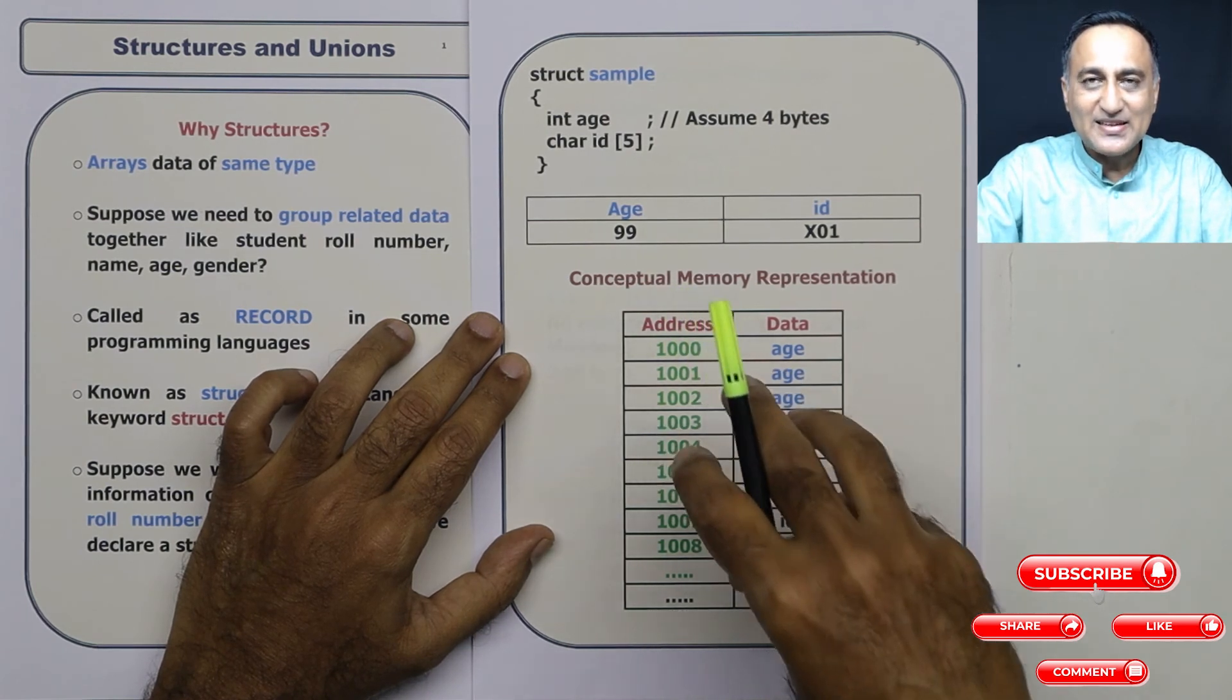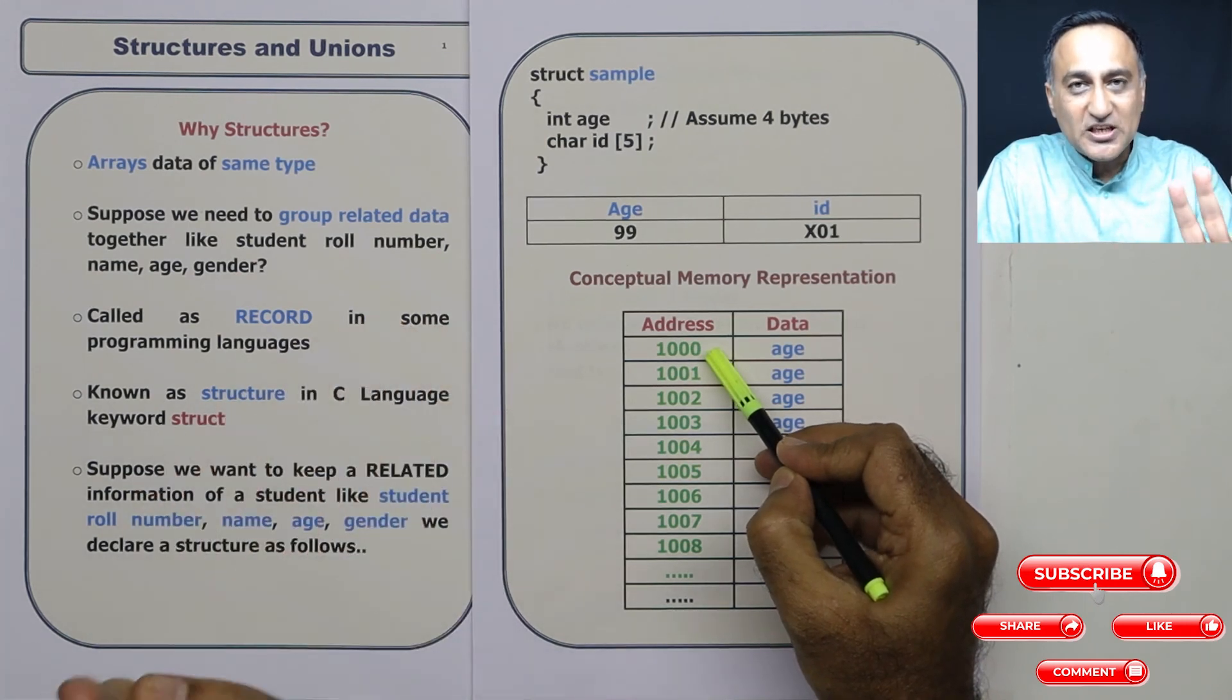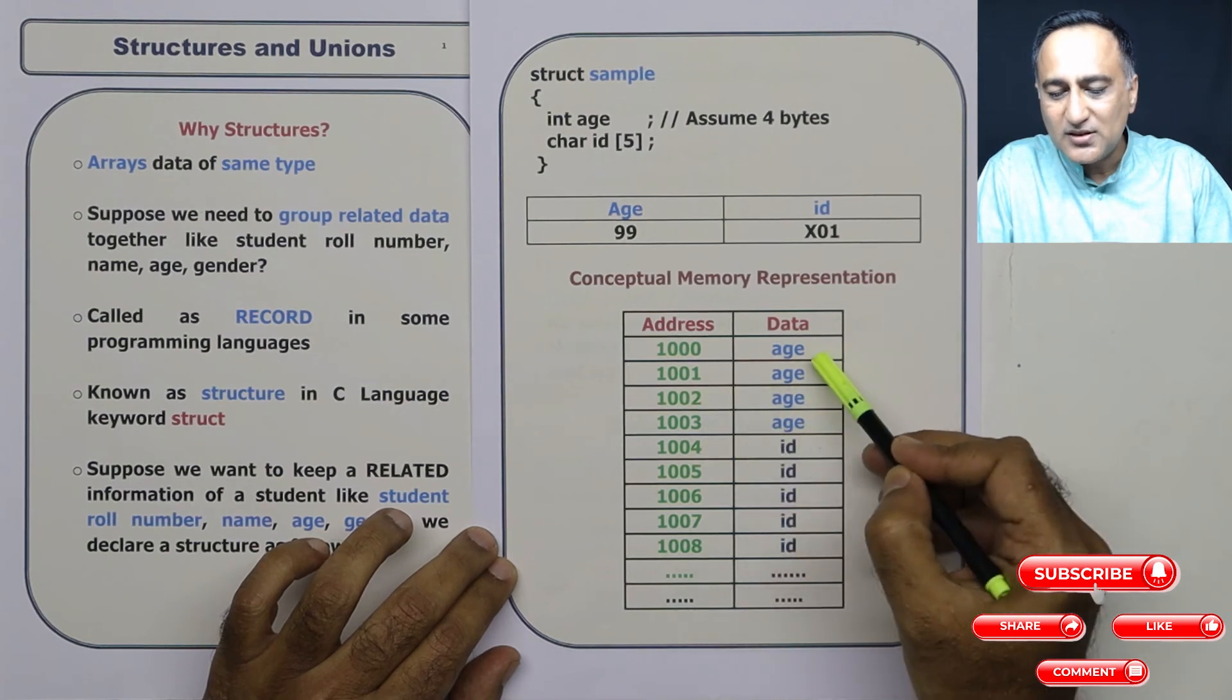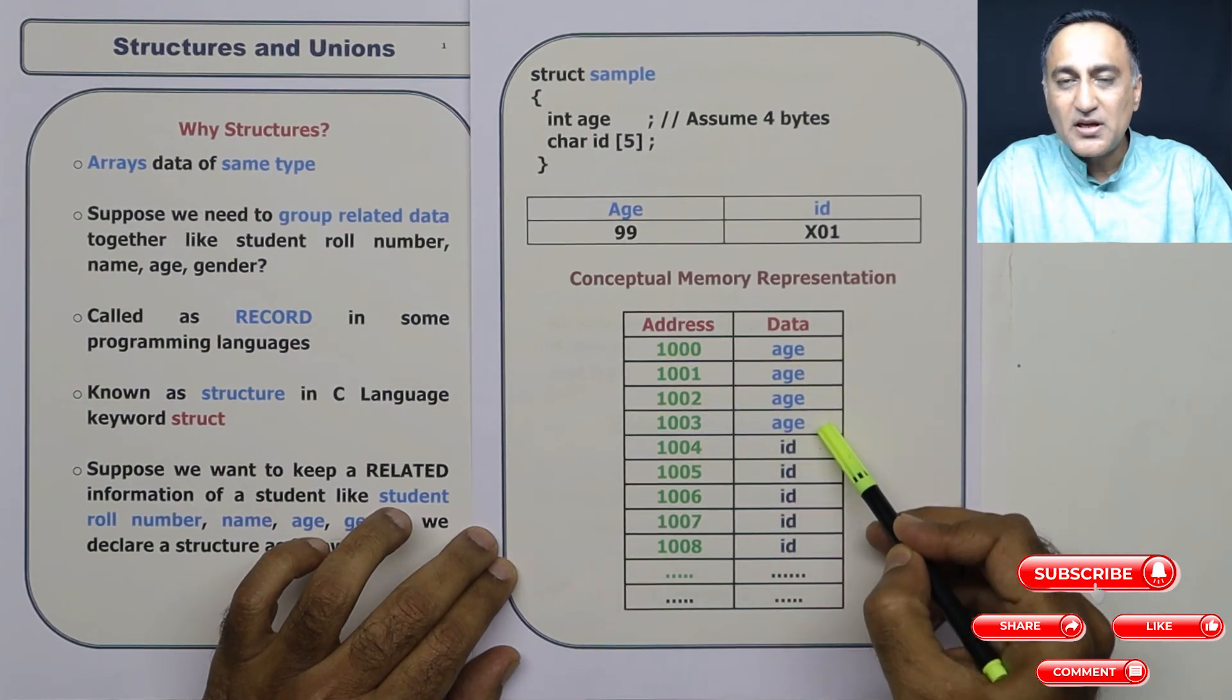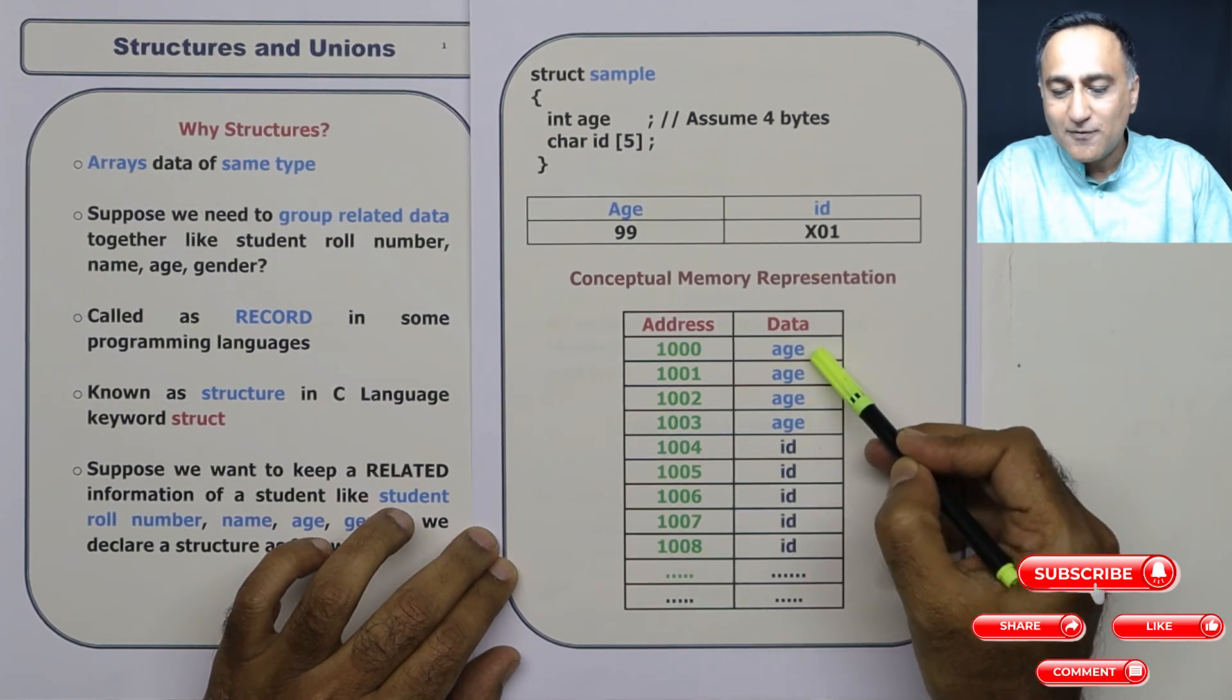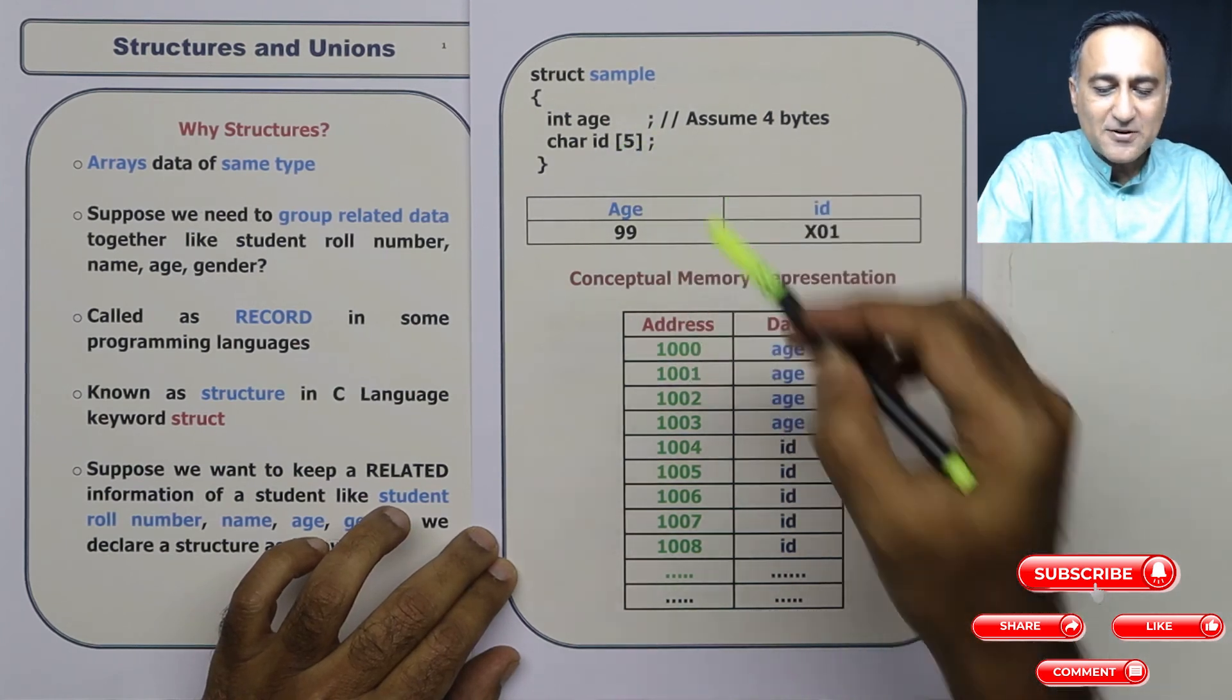Let us say the structure variable is allocated memory starting from address 1000. So integer is four bytes. So 1000, 1001, 1002, 1003 is all going to be storing information related to the age. So totally age is going to have 32 bits or four bytes available for it to be stored.